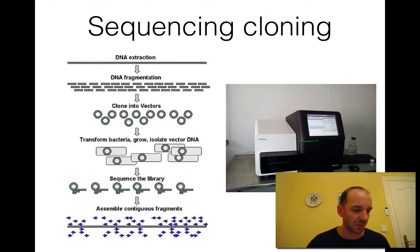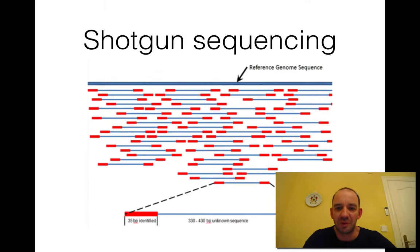Traditionally, the idea was that you have the DNA, you extract it, you fragmentize it, you clone into vectors, you put it in bacteria and grow, and then you try to put the fragments together. However, already during the human genome project, it was realized that it's much more efficient to use shotgun sequencing.